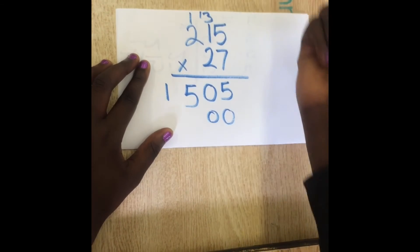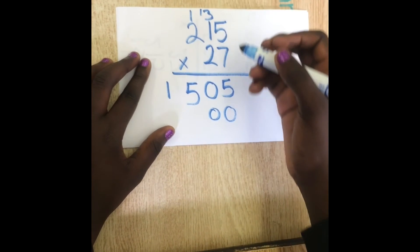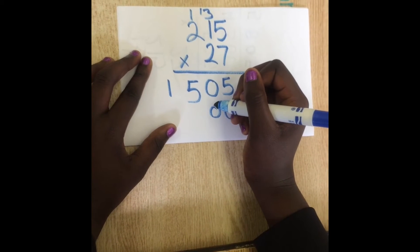Then you do 2 times 5 which gives you 10. And you put the 0 under the 0 and the 1 over the 1.